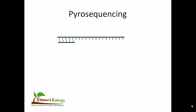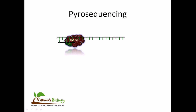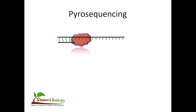Here we have a DNA sequence with a primer added at the end. We put DNA polymerase there to synthesize it — it should be DNA polymerase, sorry for that. After adding the DNA polymerase, it will move along and generate a new strand.